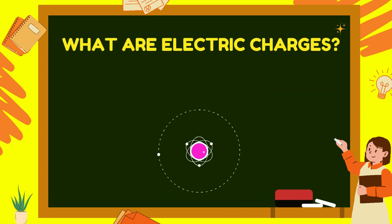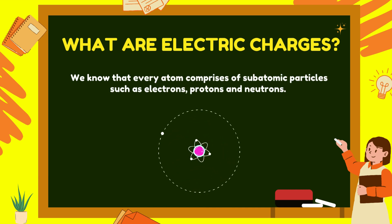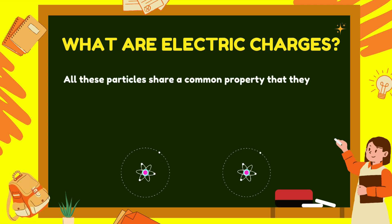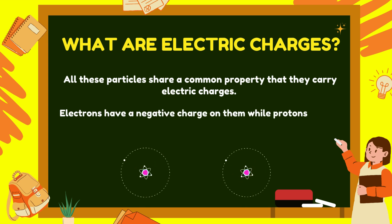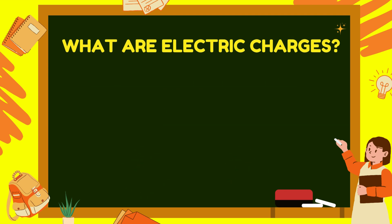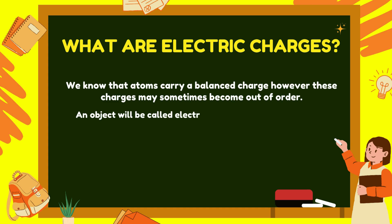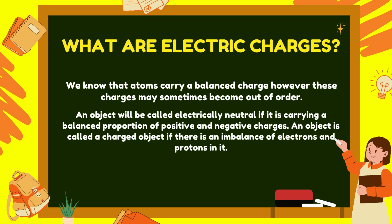What are electric charges? Every atom comprises subatomic particles such as electrons, protons, and neutrons. All these particles carry electric charges. Electrons have a negative charge while protons have a positive charge. Atoms carry a balanced charge, however these charges may sometimes become out of order. An object is called electrically neutral if it carries a balanced proportion of positive and negative charges, and charged if there is an imbalance of electrons and protons.